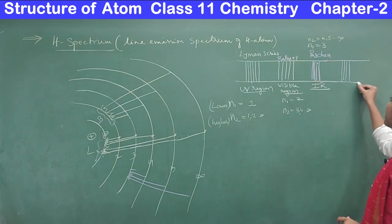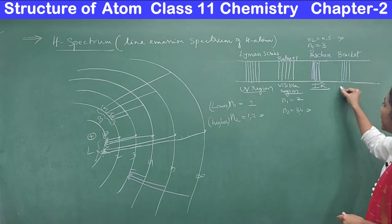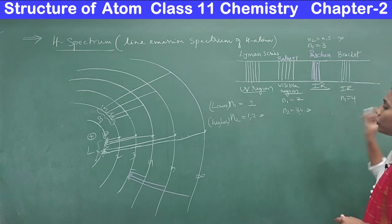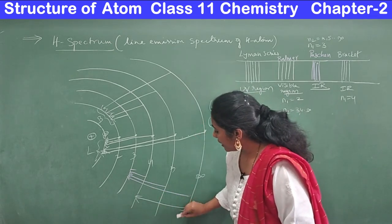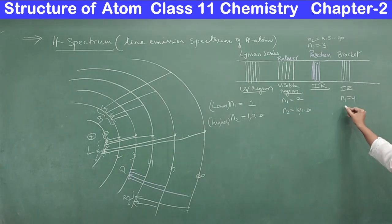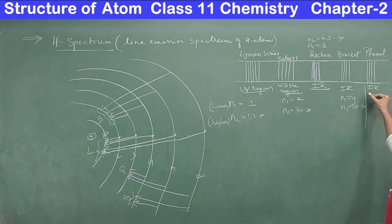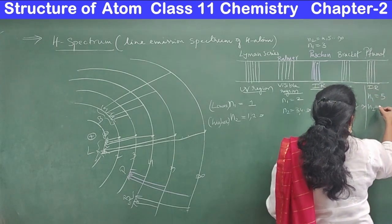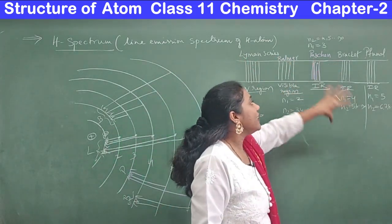You have another series called the Brackett series — these radiations also belong to the IR region. Here n₁ is equal to 4, meaning from higher shells the electron goes to the fourth shell, and n₂ starts from 5, 6, ... up to infinity. And there is one more series called the Pfund series (P is silent). The Pfund series also belongs to the IR region; here n₁ is 5 and n₂ starts from 6, 7, 8, ... up to infinity.